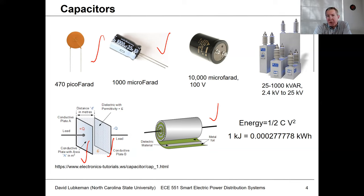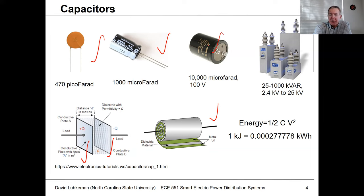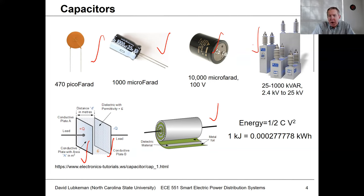When we talk about utility applications we scale all this up. Instead of fitting everything into a small cylindrical container, utility-type power factor correction capacitors are made much larger by enclosing them in larger metal boxes. You would also have insulators appropriate to the voltage level you're working with.